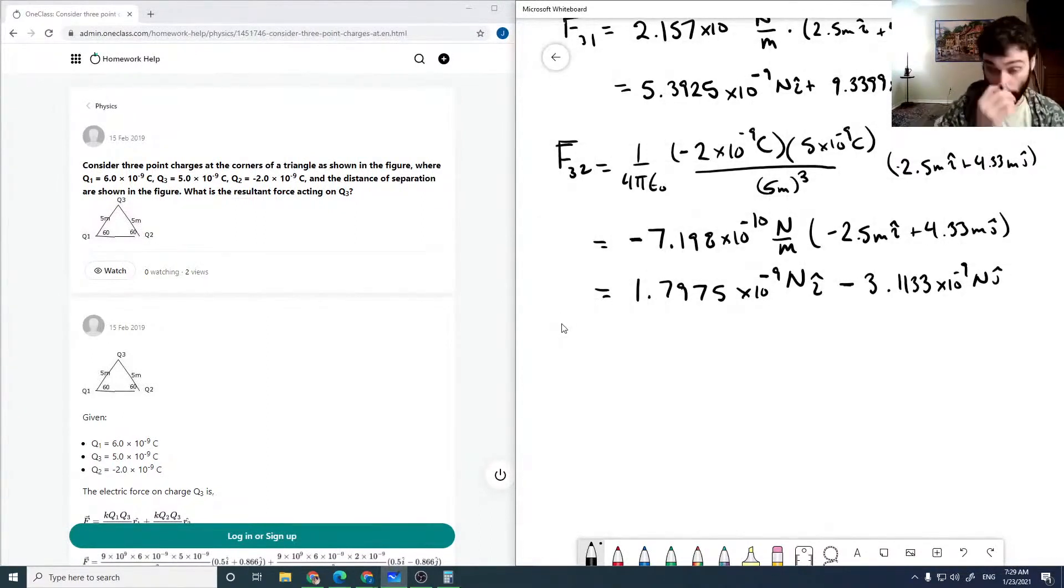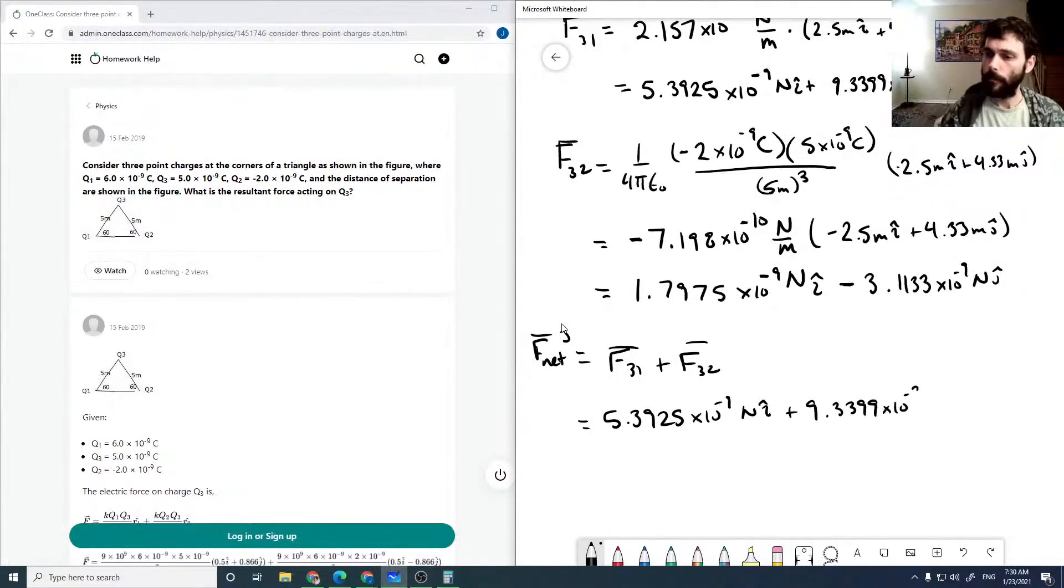The net force is the sum of these two forces. Our net force on the 3 particle is 7.1900 times 10 to the minus 9 plus 6.2266.